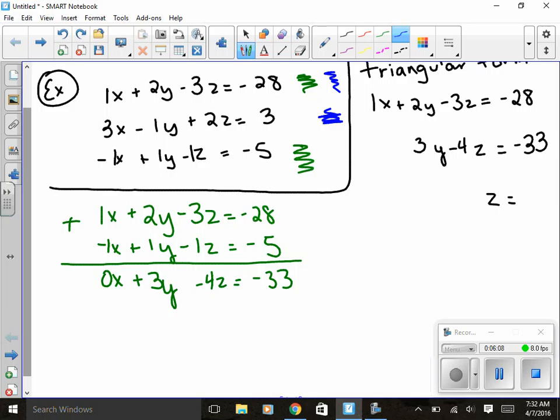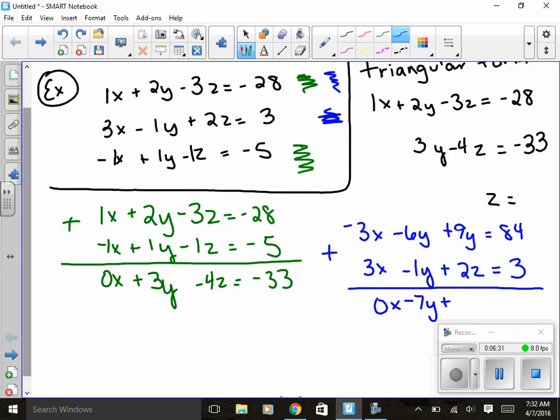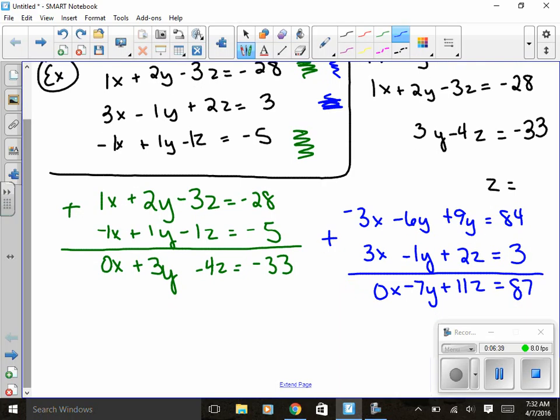Which is then going to give me, and I'm going to do it with a -3 just so I can add, so I have -3x - 6y + 9z = positive 84. I know it's getting large but it works. The second equation we know is just going to be the same. I'm going to go ahead and add these and I get that 0x - 7y + 11z = 87. So now I can get that z by itself, and I'm going to do that by combining this equation and this equation together.